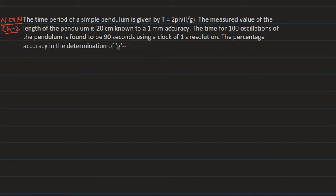The time period of a simple pendulum is given by the relation: T = 2π√(L/g), where L is the length of the pendulum and g is the acceleration due to gravity.